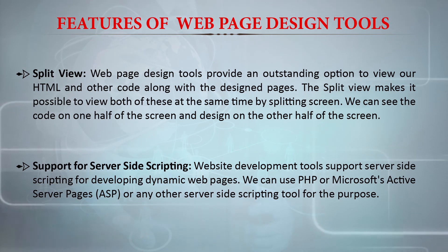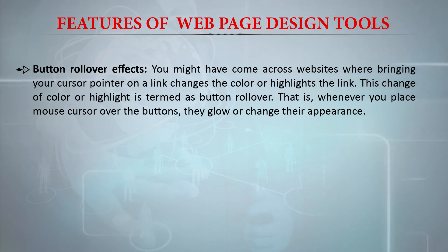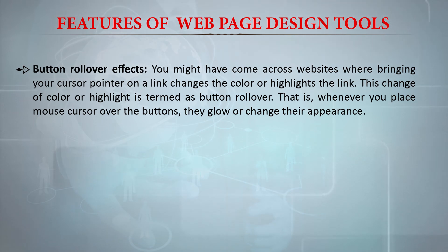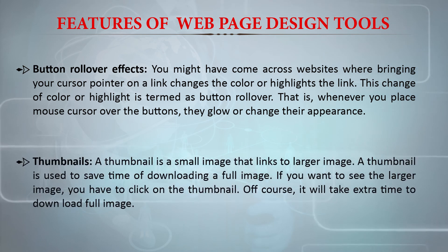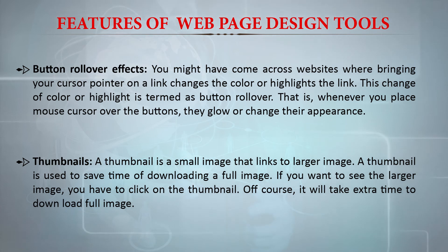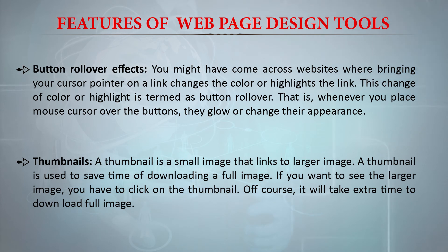Button rollover effects: you may come across websites where bringing your cursor over a link changes its color or highlights it — this change is termed a button rollover. Whenever we place our mouse over buttons, they glow or change their appearance. Thumbnails: a thumbnail is a small image that links to a larger image. The thumbnail is used to save time downloading a full image; if you want to see the larger image, you click on the thumbnail.